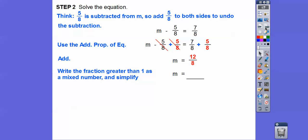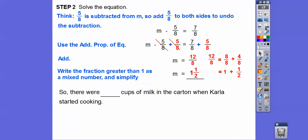So 12/8 is the same as 8/8 plus 4/8, which equals 1 and 4/8. That reduces to 1/2, so we get 1 and 1/2. So there was 1 and 1/2 cups of milk in the carton before Carla started cooking.